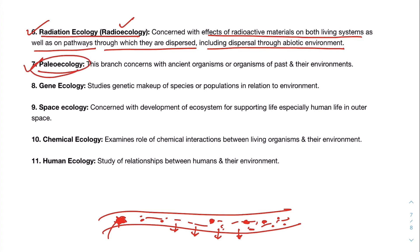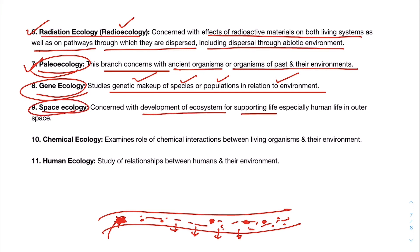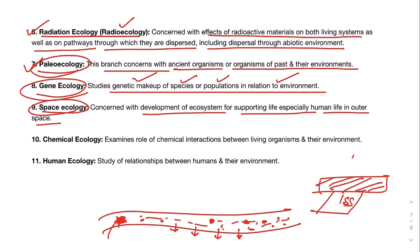Paleoecology is the branch concerning ancient organisms of the past and their environment. Gene ecology studies the genetic makeup of species or populations in relation to the environment. Space ecology is concerned with the development of ecosystems for supporting life, especially human life, in outer space — the International Space Station being a notable example. Chemical ecology examines the role of chemical interactions between living organisms and their environment.